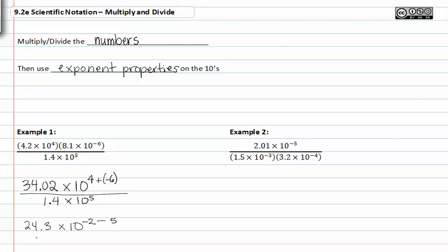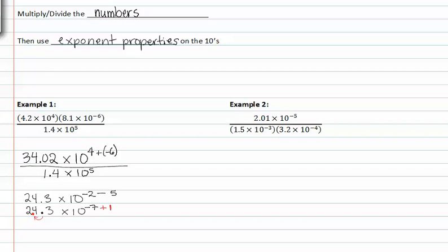So now I have 24.3 times 10 to the negative 7. It's not yet in scientific notation. It's almost there, but to get it in true scientific notation, I have to shift my decimal to the left one place. And that will cause my exponent to have a one added to it. Since I made a big number smaller, I have to add one to the exponent. So my final answer ends up being 2.43 times 10 to the negative 6.